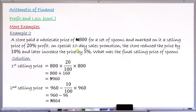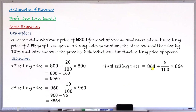After the sales promotion period ended, the store increased prices by 5%. So the final selling price is 864 plus 5% of 864. Since 5% of 864 is 43 Naira 20 Kobo, adding it to 864 gives a final selling price of 907 Naira 20 Kobo.